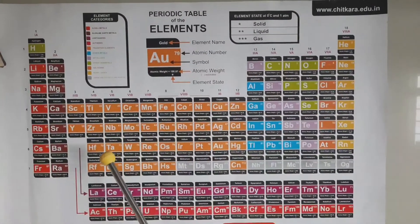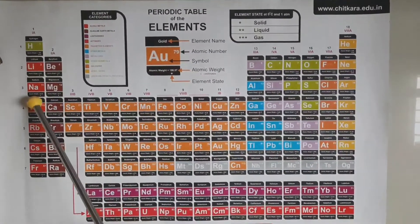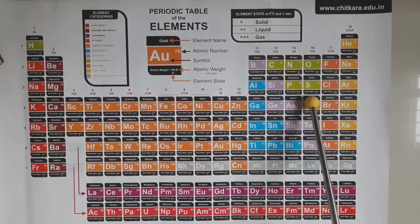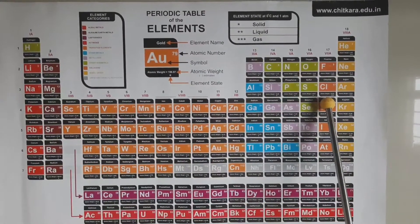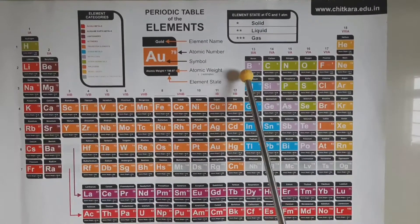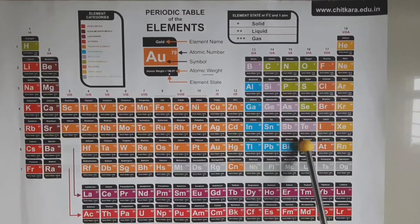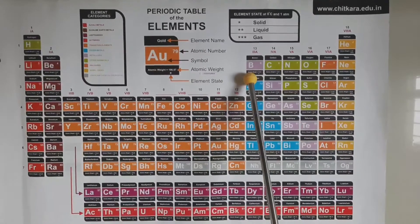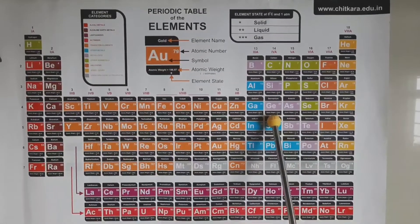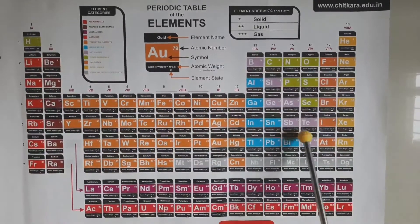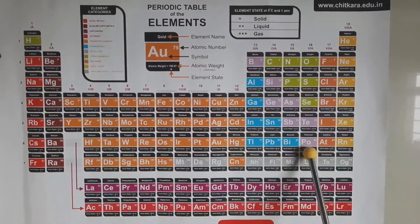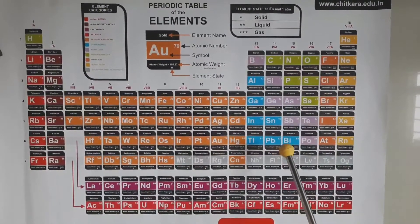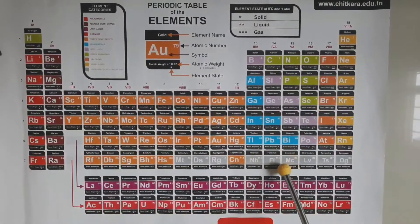In the modern periodic table, metals like sodium and magnesium are on the left-hand side, and sulfur and chlorine are on the right-hand side. In the middle, there is a zigzag line. Elements in this zigzag line are boron, silicon, germanium, arsenic, antimony, tellurium, and polonium.